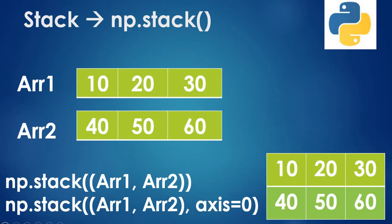We'll start with the stack method. Suppose we have two arrays: array one is [10, 20, 30] and array two is [40, 50, 60]. If we apply the stack method, the syntax is np.stack and then you pass array one followed by array two. You will get the output [10, 20, 30] followed by [40, 50, 60]. Stacking means this array will be kept on top of the other array.